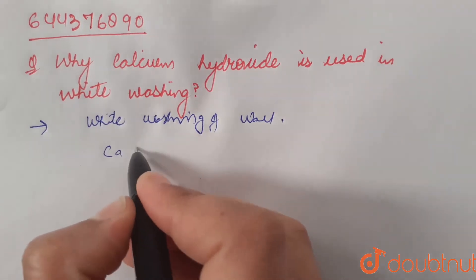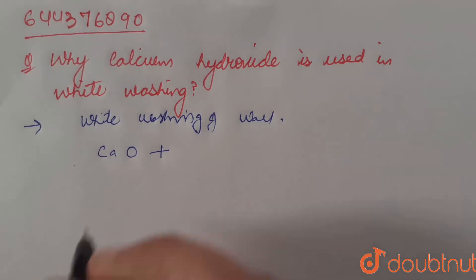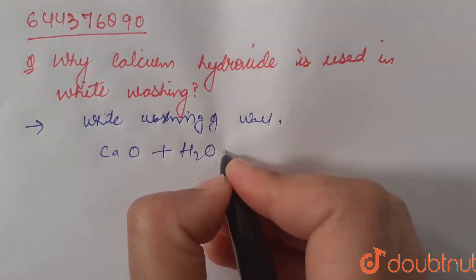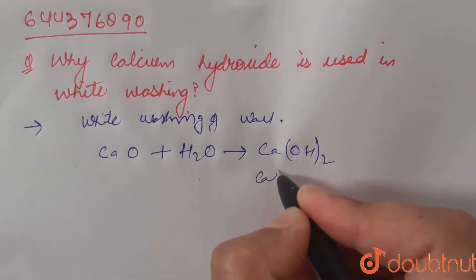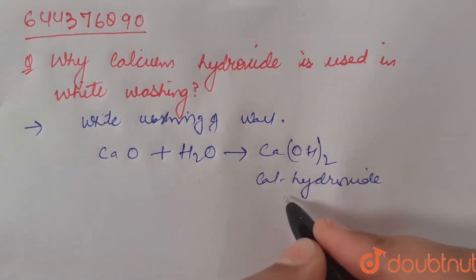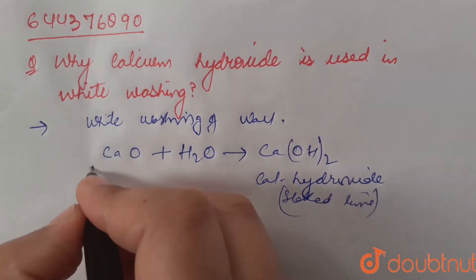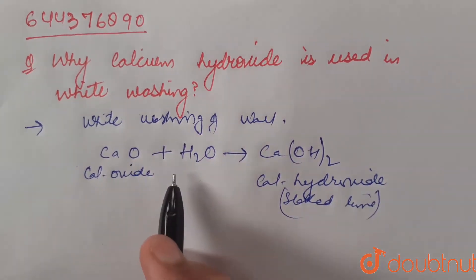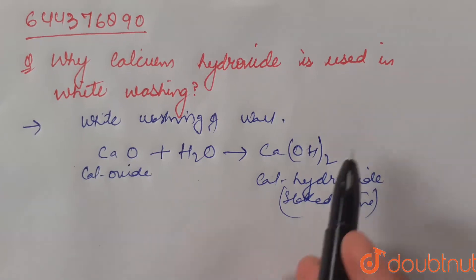Calcium oxide, that is CaO, it is made to react with water and they form calcium hydroxide Ca(OH)2. Calcium hydroxide also called as slaked lime. Calcium oxide is initially made to react with the water and they form calcium hydroxide.